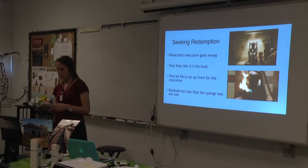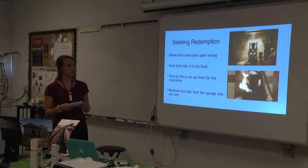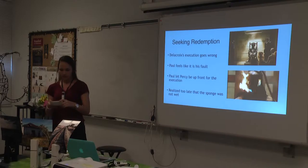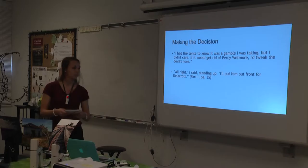Paul seeks redemption after Del's execution because it went so horribly, and Paul was the one who appointed Percy to be out front for the execution in order to get Percy to go to Briar Ridge and leave E-Block. He realized the execution was going to go into a downward spiral once he noticed the sponge was dry, but he did not realize it until it was too late.